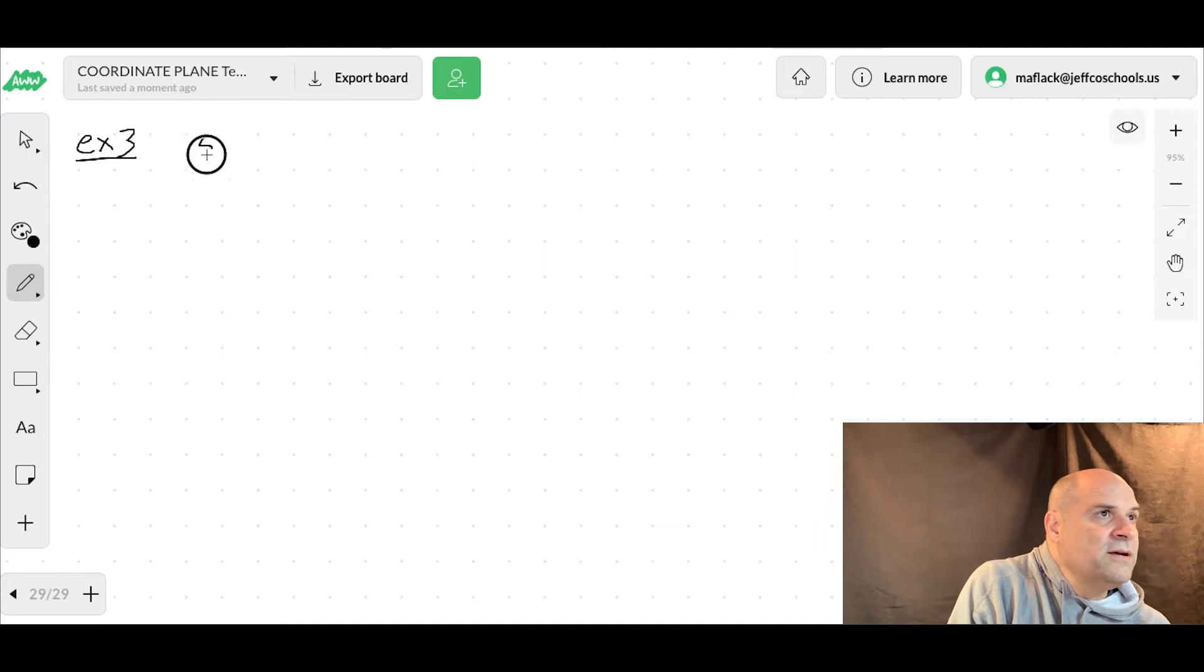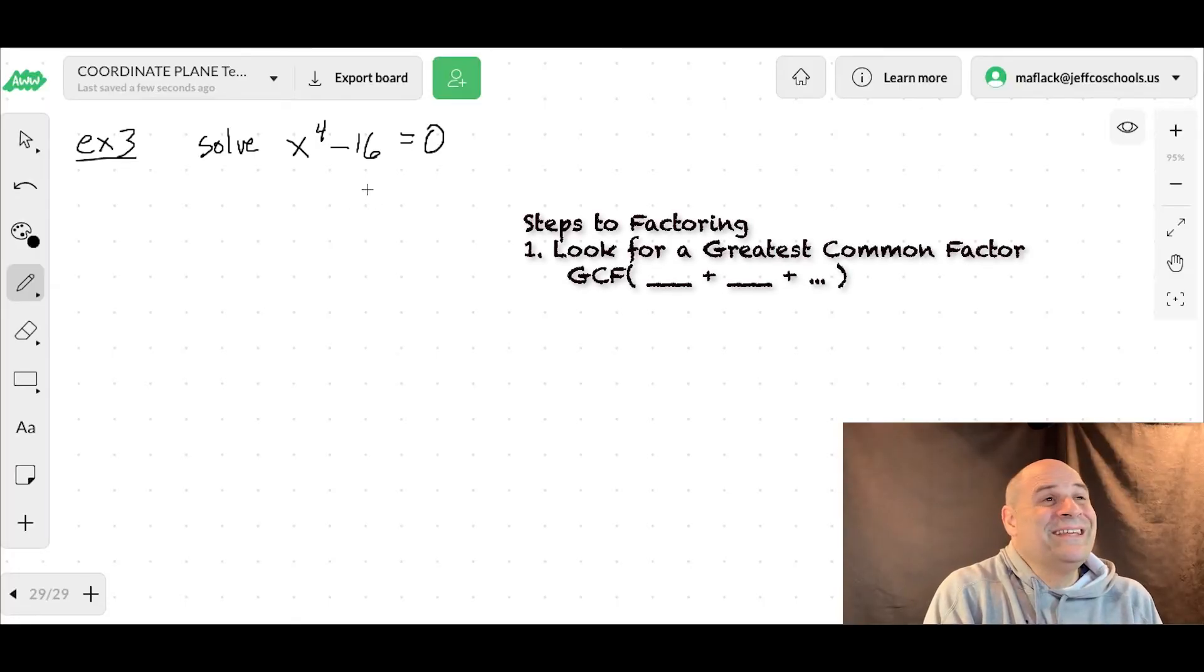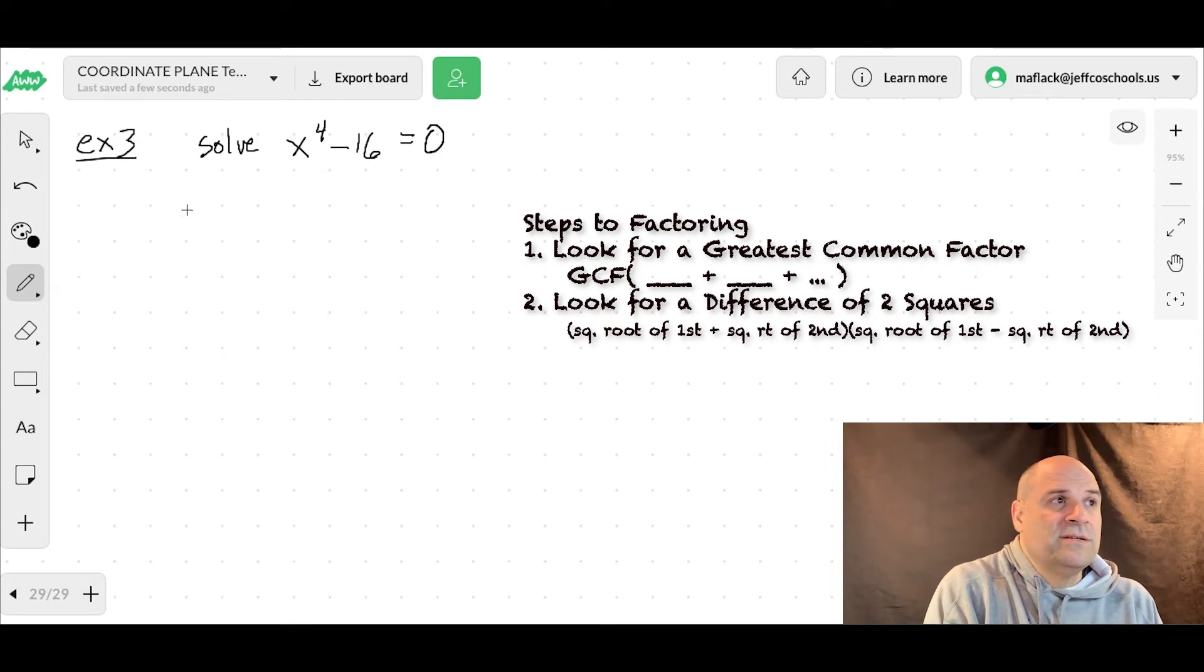We're going to solve this guy. x to the 4th minus 16. All right. I'm not afraid of you. Crazy 4 exponent guy. First step to factor. Look for a greatest common factor. There's nothing. Second is a difference of two squares. It is. Here's a difference of two squares. So the square root of the first plus the square root of the second times the square root of the first minus the square root of the second equals 0.